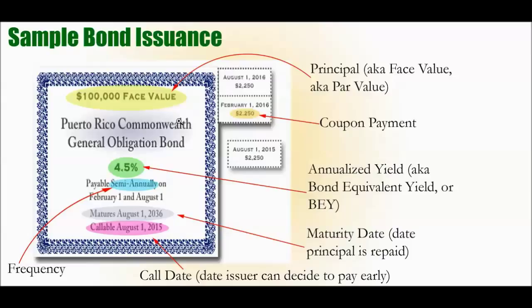You can compare it to dividend yield when trying to get an idea of the income possibilities of a particular bond versus a particular stock — we'll discuss that a little bit later. As noted, payment frequency varies: some bonds pay annually, others semi-annually, others quarterly. That's also something you want to consider.